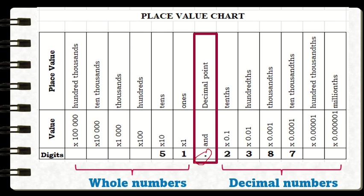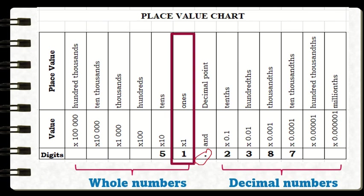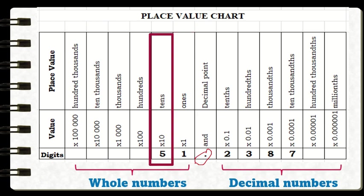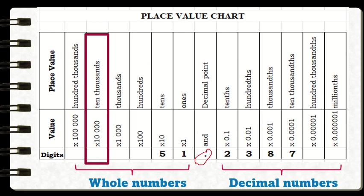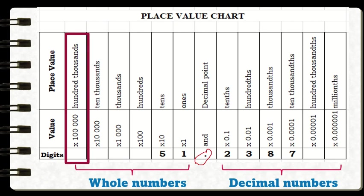Let's identify each place value, beginning with the decimal point. Going to the left, whole numbers start with the ones place — the first place to the left of the decimal point. Next is the tens place, followed by the hundreds place, then the thousands place, ten-thousands place, and the hundred-thousands place. As we go farther to the left, the numbers are multiplied ten times greater from the previous number.